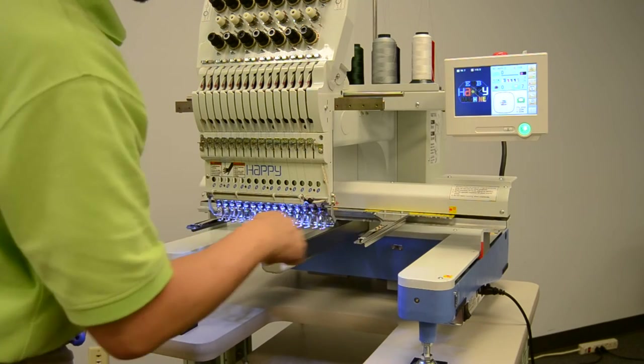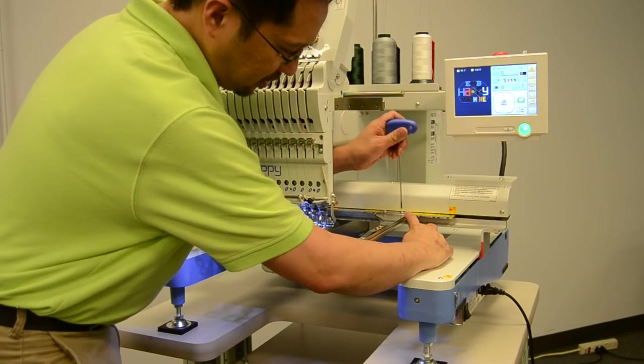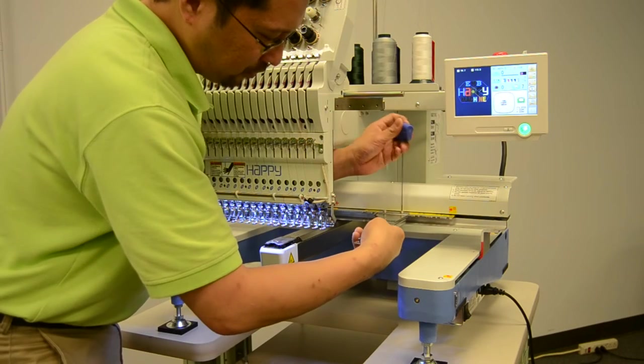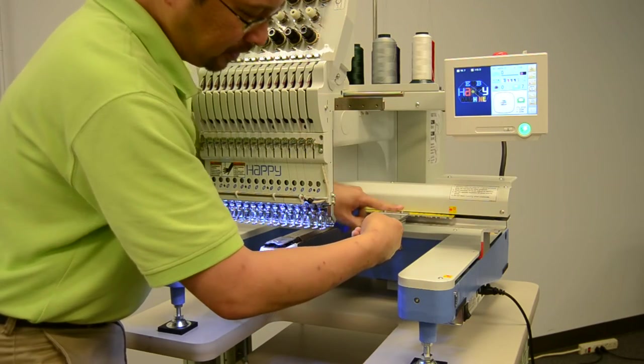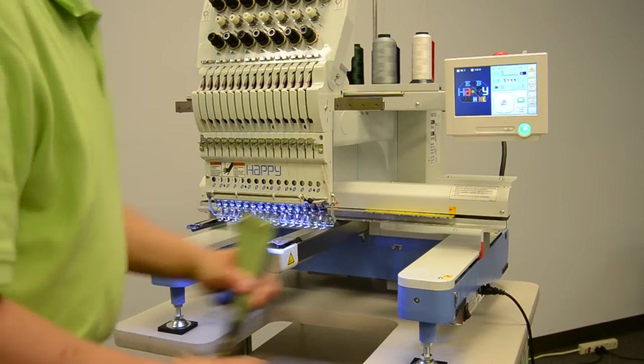There's one on each side, and what we'll do is loosen the two 3mm hex screws right here with our 3mm hex wrench that actually comes with the machine. We simply need to loosen them, and the arm comes off without you having to remove the screw.